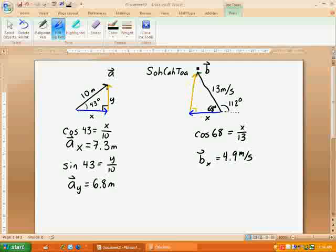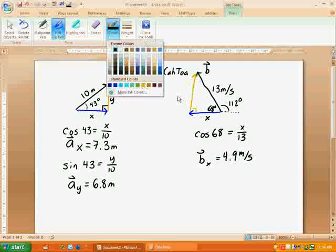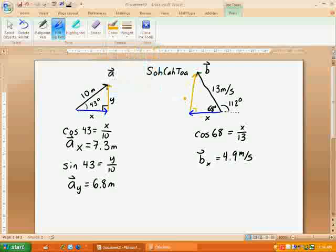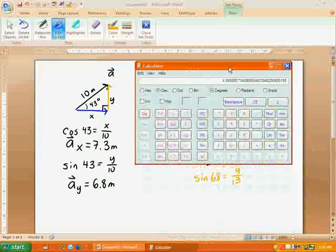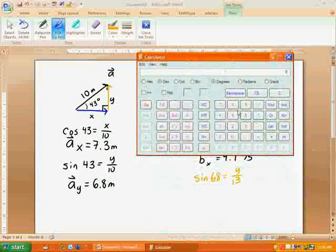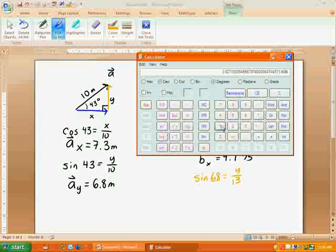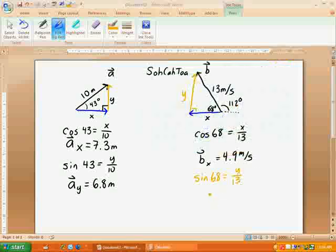And then let's go ahead and do the y. For that, I need the sine of 68, which is equal to y over 13, opposite over hypotenuse. When I do that in my calculator, I will do 68, take the sine, multiply by 13, because that's y divided by 13. And I get 12.1. So b in the y direction is 12.1 meters per second.